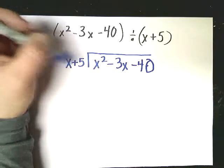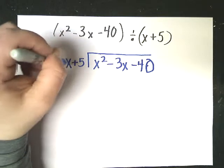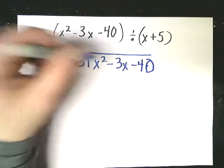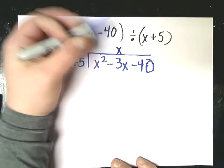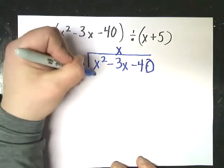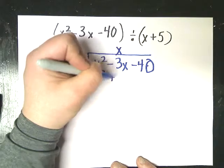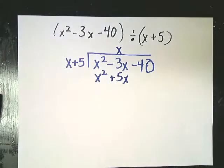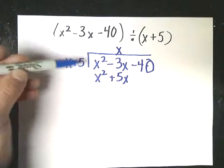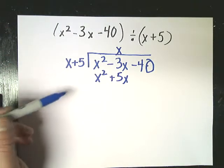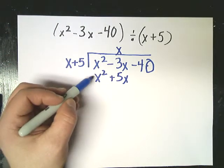Obviously x plus 5 can't go into x squared, so I'm going to have to go over to this term. And then what I want to do is sort of just look at the first terms. What do I have to multiply x by to get rid of x squared? And in this case, it's just x. So I do x times x, which is x squared. And x times 5, which is plus 5x. Here's the part that visually is unappealing to me.